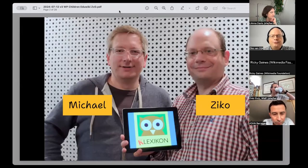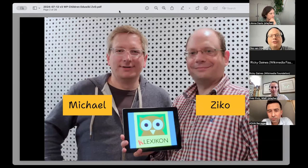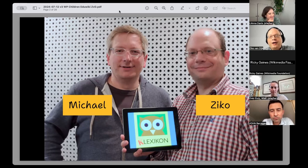I would like to share here the experience I have gained over the last 10 years. I have co-founded a wiki encyclopedia for children, the Klexicon. It's in German and it is written by adult volunteers. The target group is children from 8 to 14 years old.